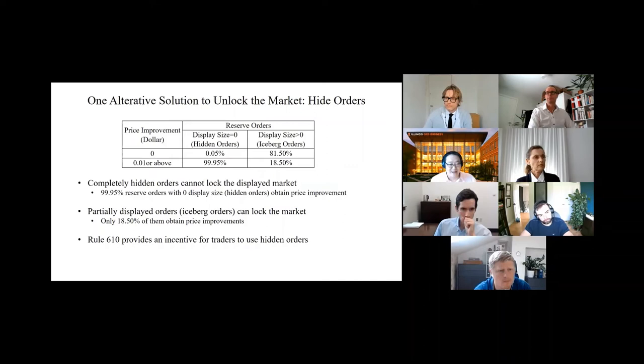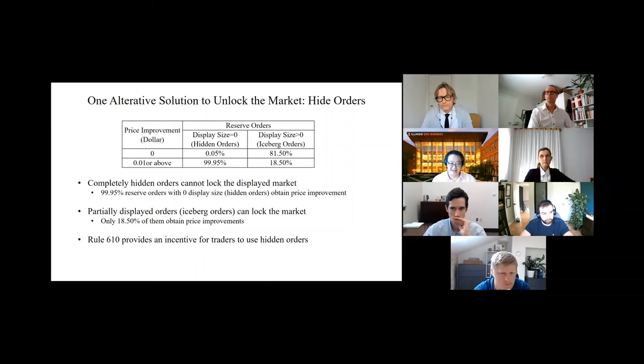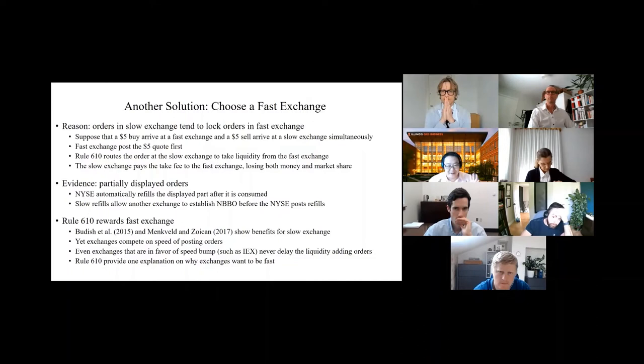There's an alternative solution to unlock the market: you can hide your orders. If you completely hide your orders, you cannot lock the displayed market. For example, if you display zero size, 99.95% of the time you get a price improvement. That means your executing price will be at least one cent better than your displayed price. But once you decide to display the order, you run the risk of locking the quote of another exchange. In this case, only 18% of partially displayed orders obtain price improvements.